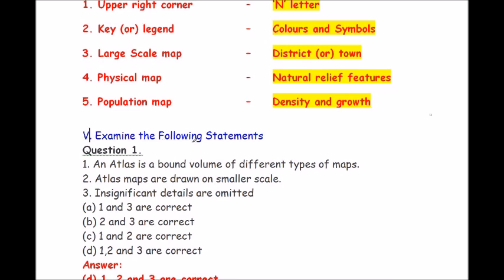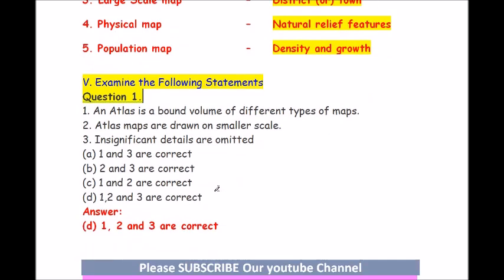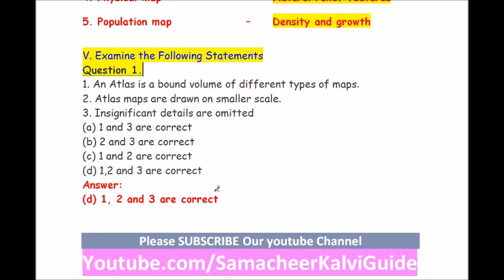Roman number 5, examine the following statements. Question 1: an atlas is a bound volume of different types of maps. Question 2: atlas maps are drawn on smaller scale. Question 3: insignificant details are omitted. The answer is 1, 2 and 3 are correct.